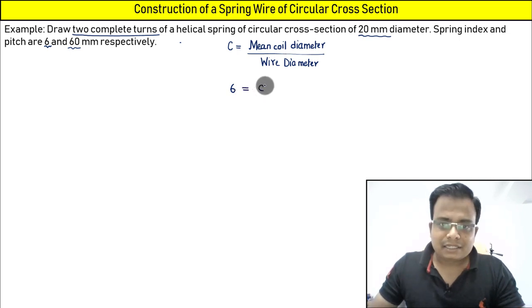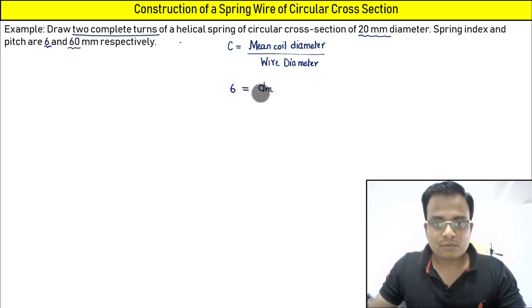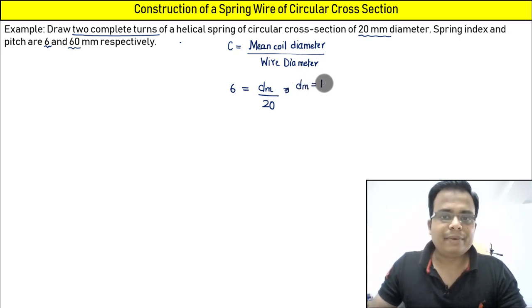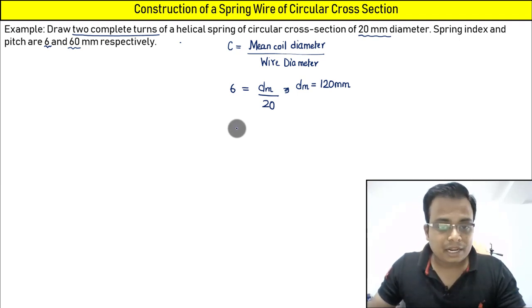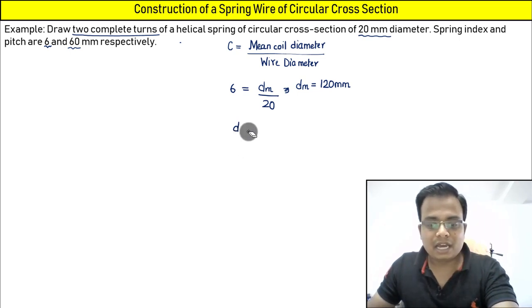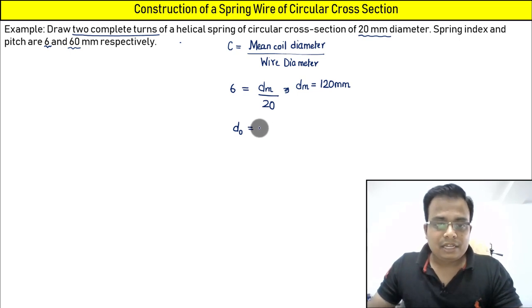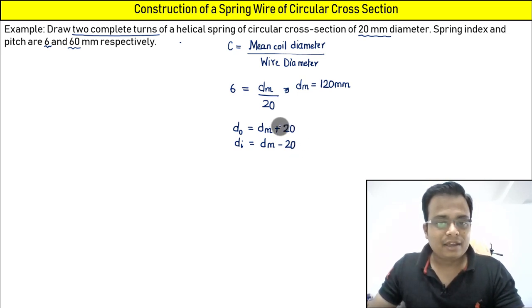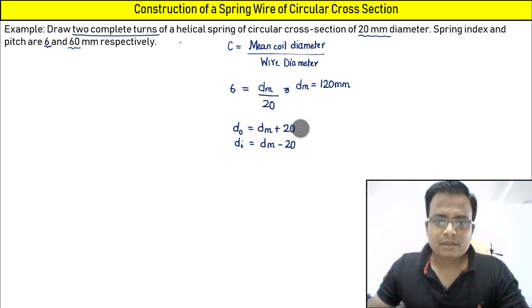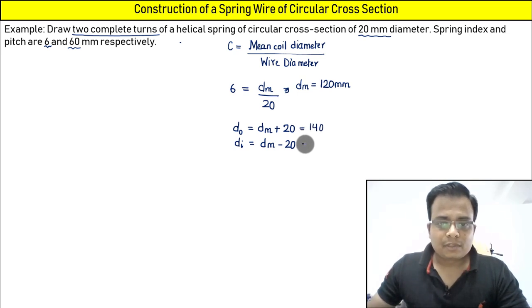Since the spring index C equals 6, we have 6 = D_mean / 20, so D_mean = 6 × 20 = 120 mm. The mean coil diameter is 120 millimeters. From this, we can work out the internal and external diameters: D_outer = D_mean + 20, and D_inner = D_mean − 20, giving D_outer = 140 mm and D_inner = 100 mm.